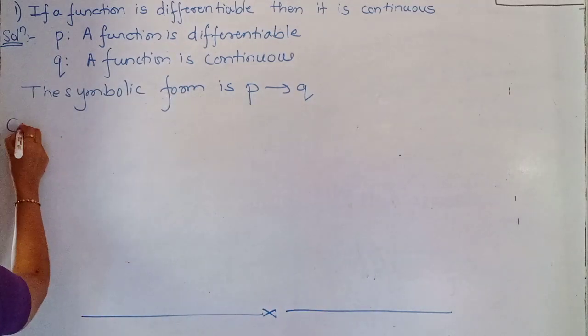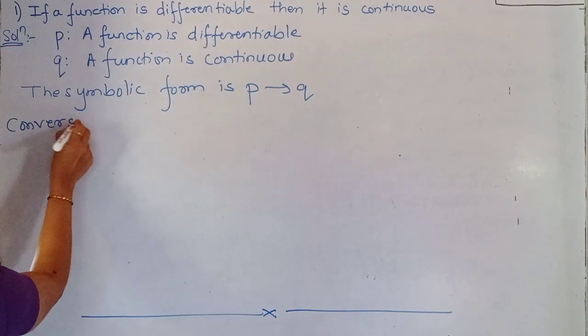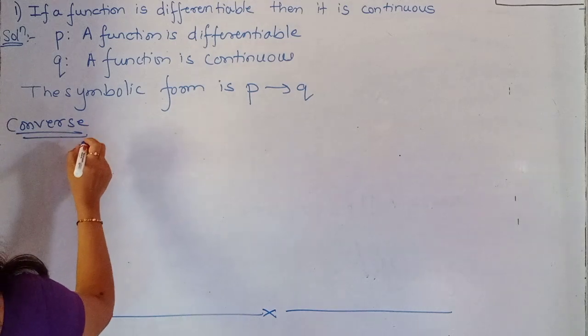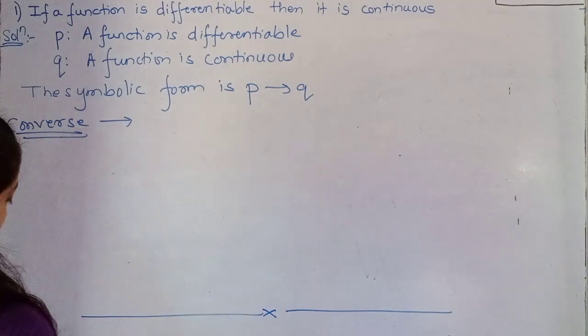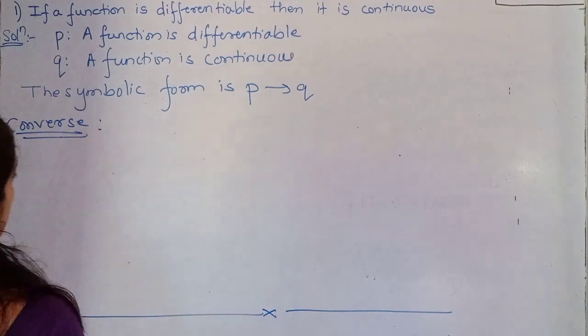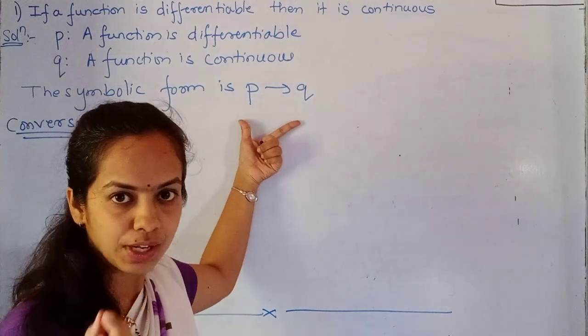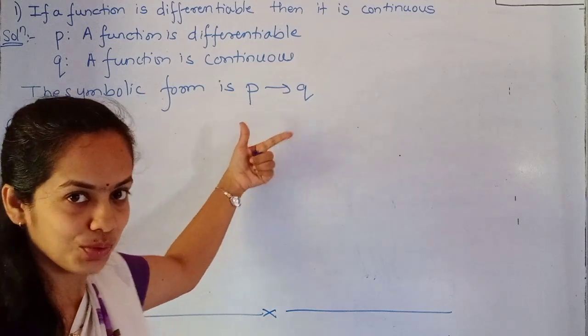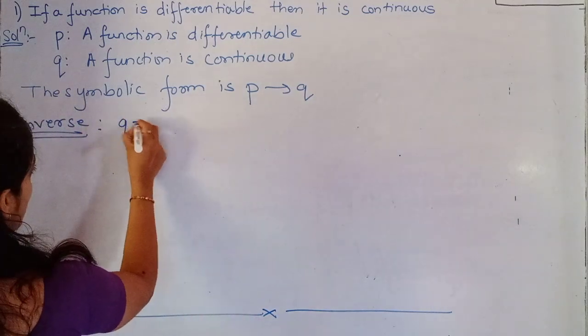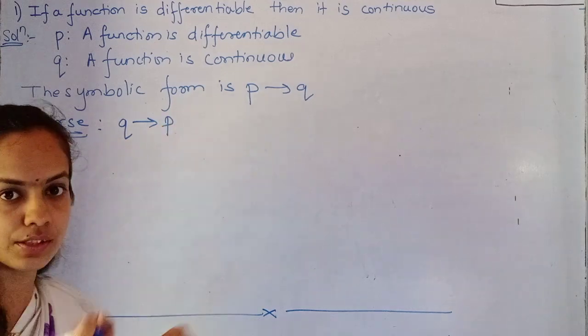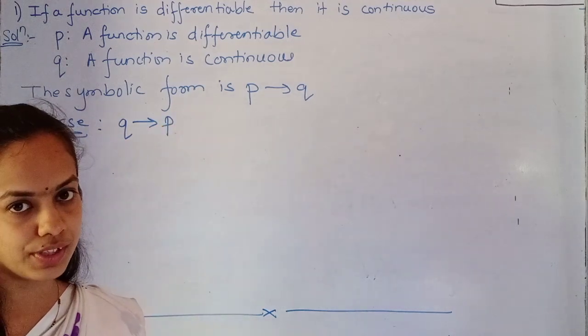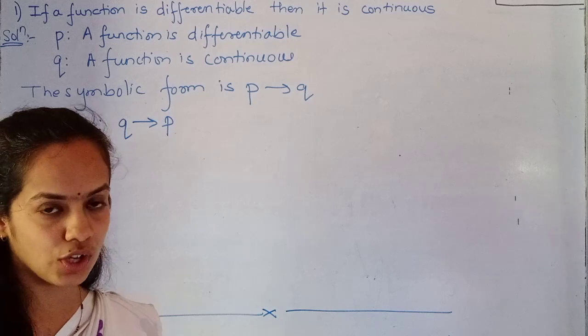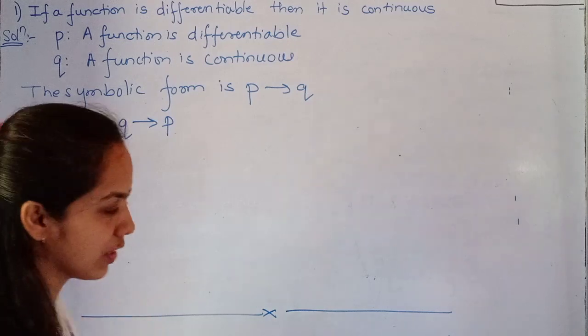Now let us try how to find out converse. For converse, the symbolic form is P implies Q. We just reverse it - Q goes first, P goes second. So what it means is Q implies P. P implies Q becomes Q implies P. So now it's pretty easy. We just change the statement - what's there goes here, what's here goes there.